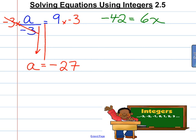Now, the other side, we have negative 42 equals 6x. The opposite operation here, the opposite of multiplying by 6 is divide by 6. Divide both sides by 6.